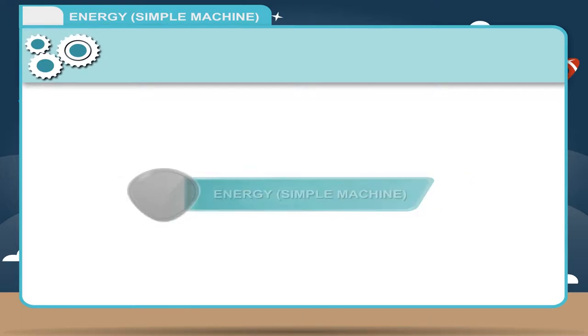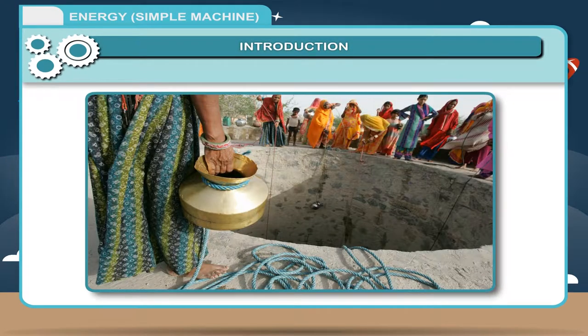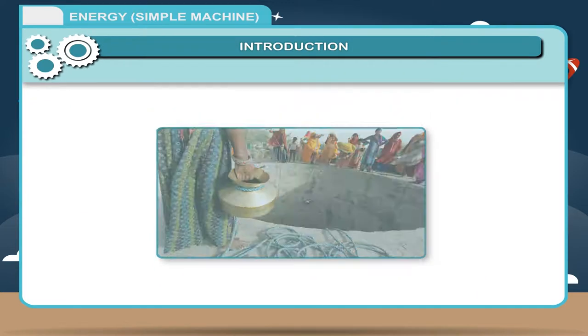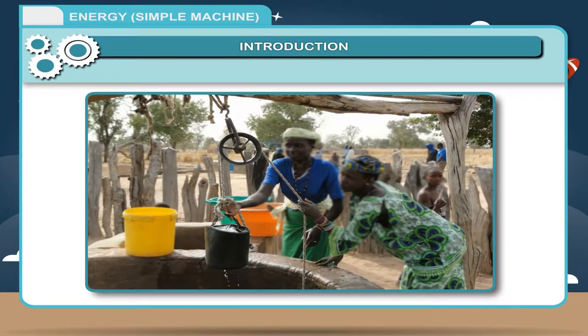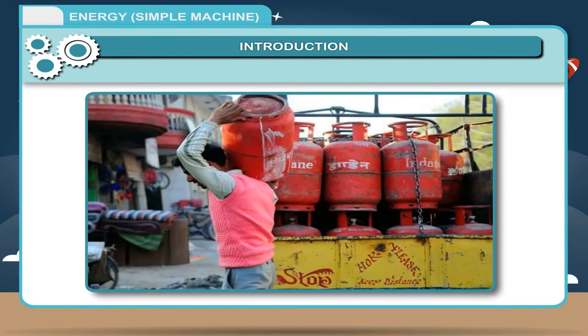Energy, simple machine. Introduction: When we pull a bucket full of water from a well, we find it difficult to pull. But if we use a pulley to lift the bucket, it becomes easy to lift the bucket from the well. Likewise, while taking a heavy load from the road to a building, we find it easy to push a heavy load like gas cylinder on the ramp inclined plane. These are examples of simple machines.